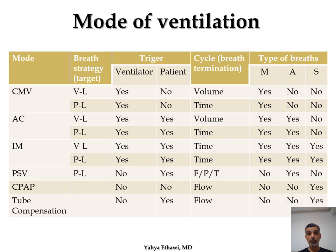In CMV you will only see mandatory waves — no assisted, no spontaneous. In assisted control, in neonates we only use pressure-limited. The ventilator provides help, the patient also contributes. Volume-limited cycles by volume, pressure-limited cycles by time. You will see mandatory and assisted breaths, but no spontaneous, because the ventilator will support every breath. In IMV, volume-limited and pressure-limited are both options. The ventilator provides help but in IMV there is no volume trigger — it is all time-based. You will see mandatory, assisted, and spontaneous, but the problem is they are unsynchronized.